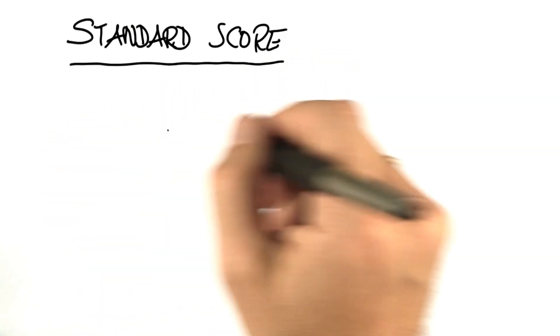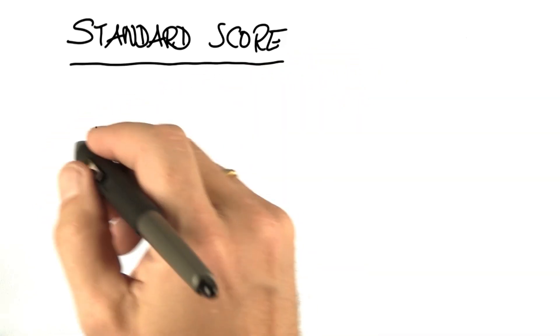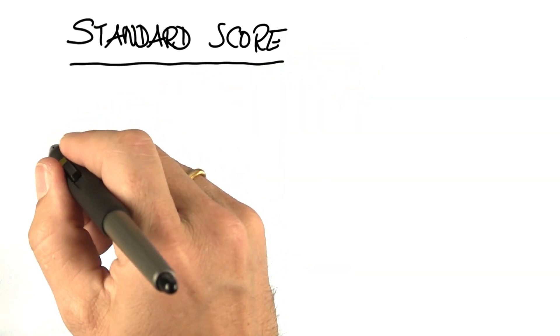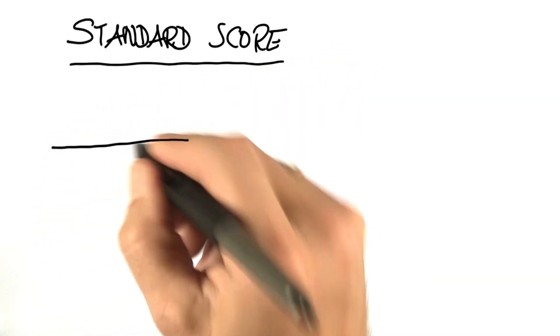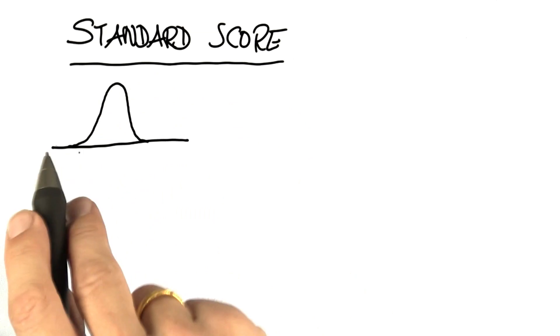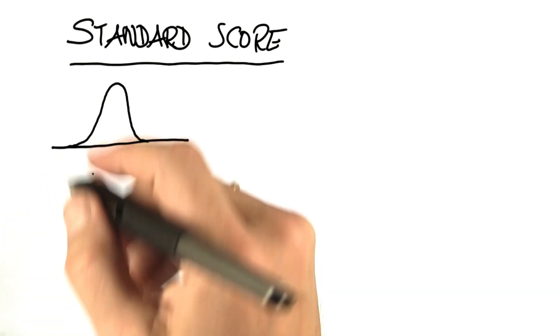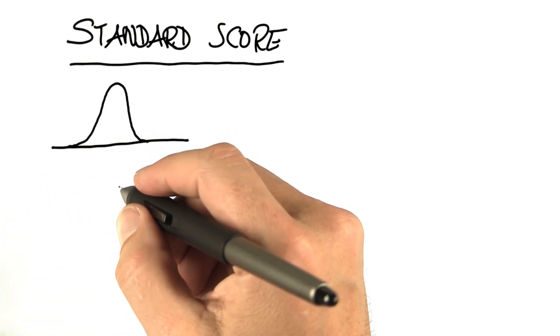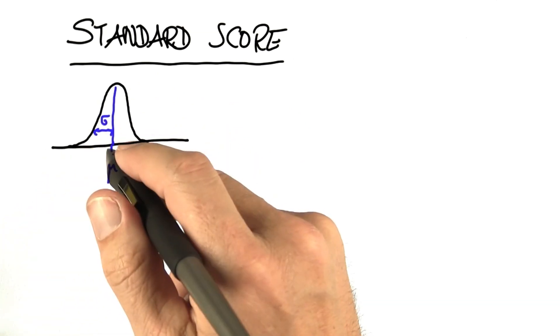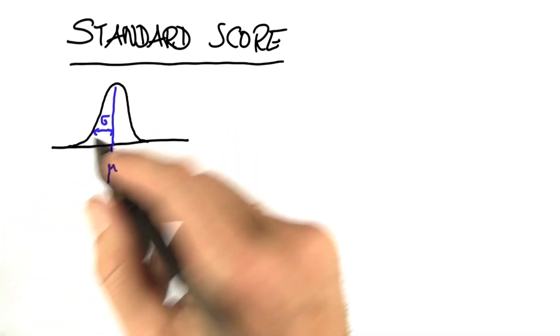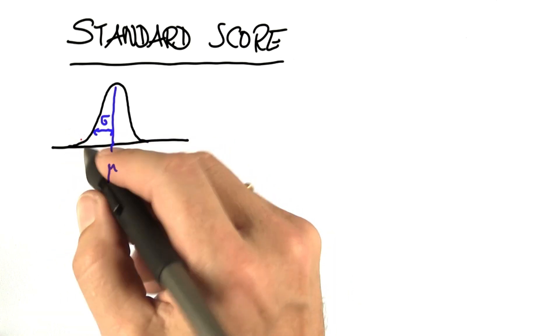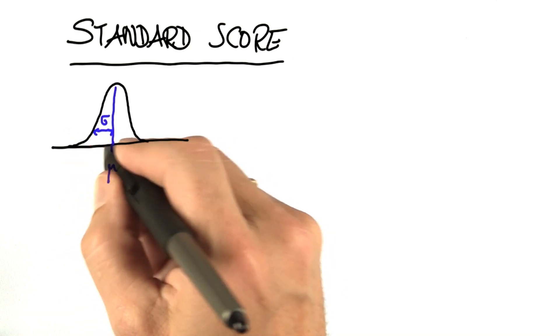I finally want to teach you the concept of a standard score. The basic idea is that for any Gaussian, no matter what the mean or the covariance is, you can state how far in or out a point x is.